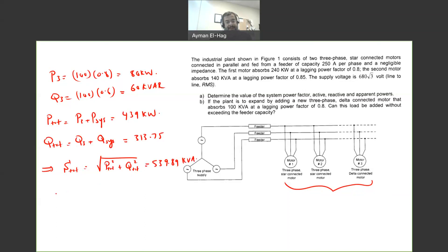Okay, now we know the total S, but S total is equal to root 3 V line, I line total. This is the total current that we are looking for.